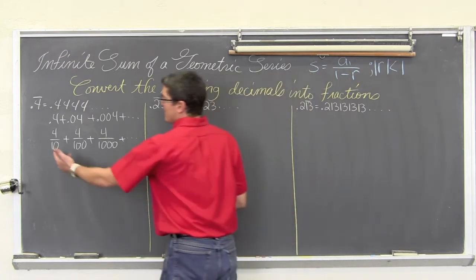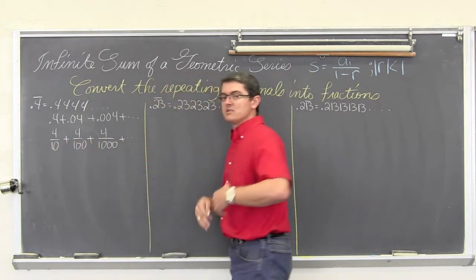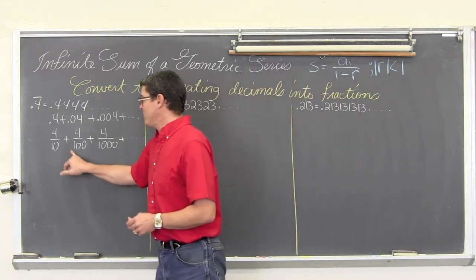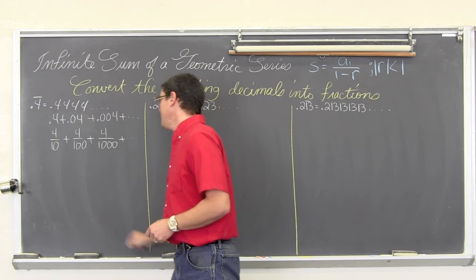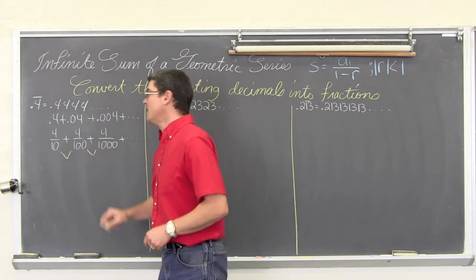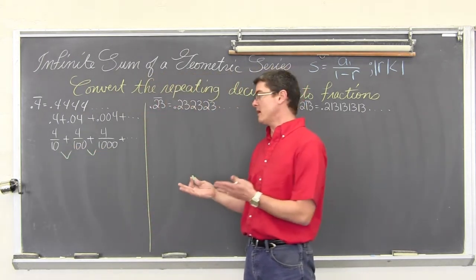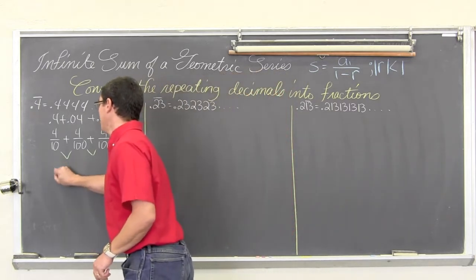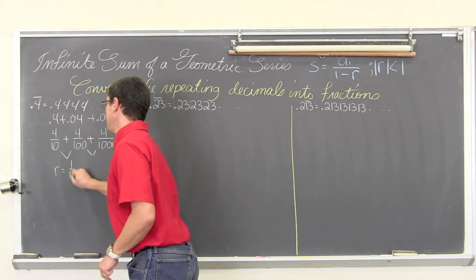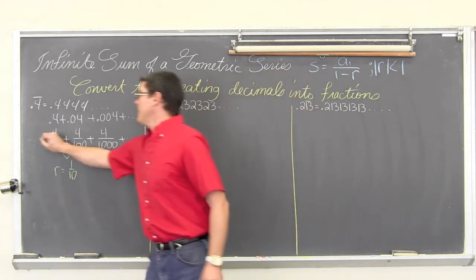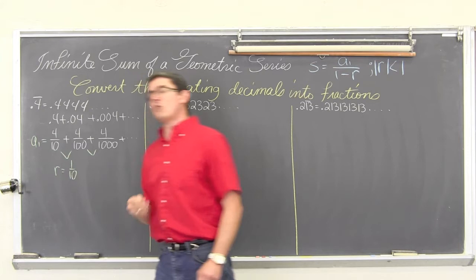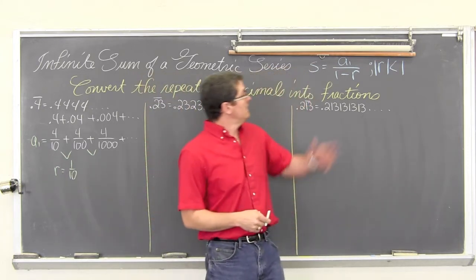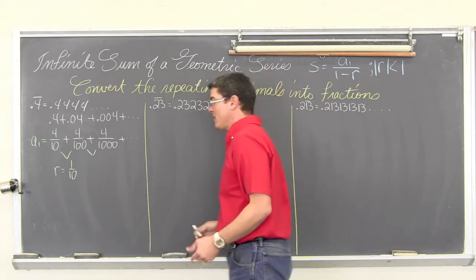Now this would be a sub 1, a sub 2, a sub 3, going on to a sub infinity. And if you look in between each of these terms, the denominator is getting bigger by a multiple of ten and the numerator is staying the same. So that means our r value is equal to one tenth. So we have an a sub 1 value of four tenths, we have an r value of one tenth, and let's find that infinite sum out.